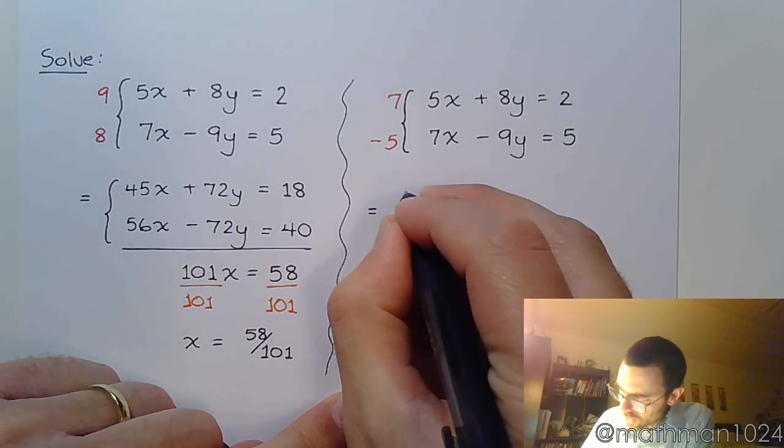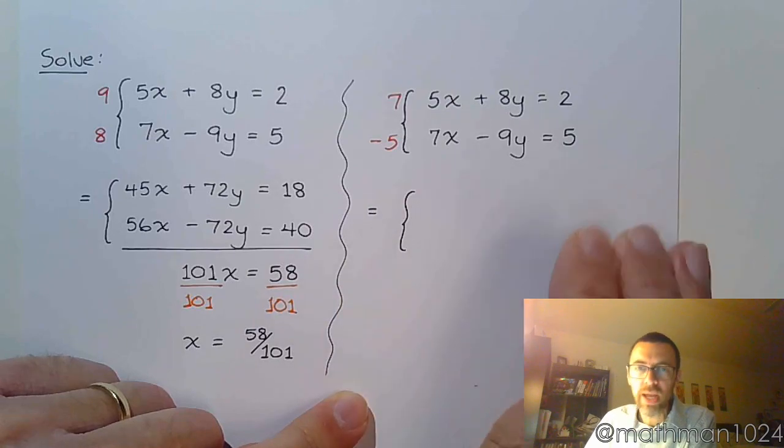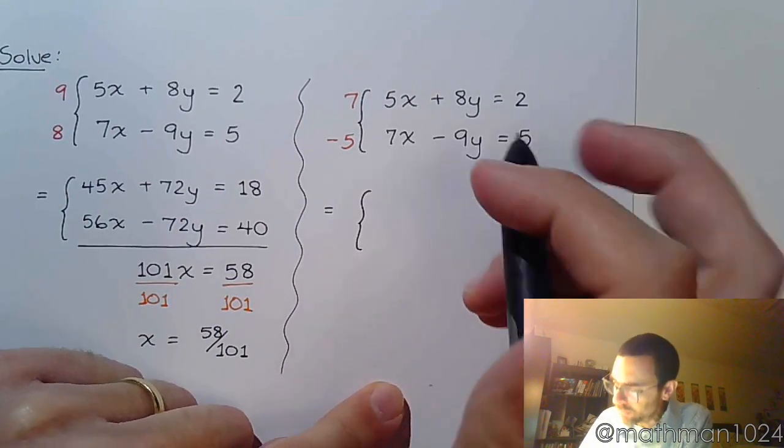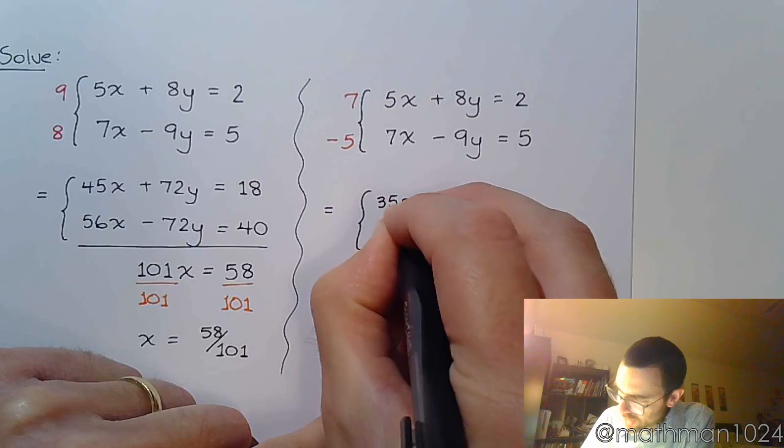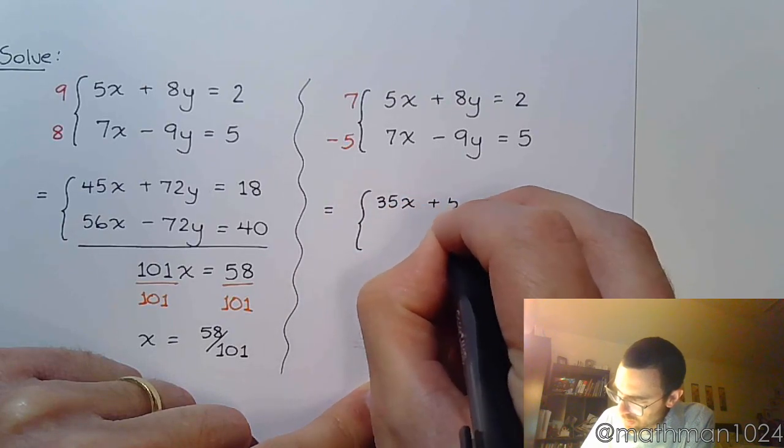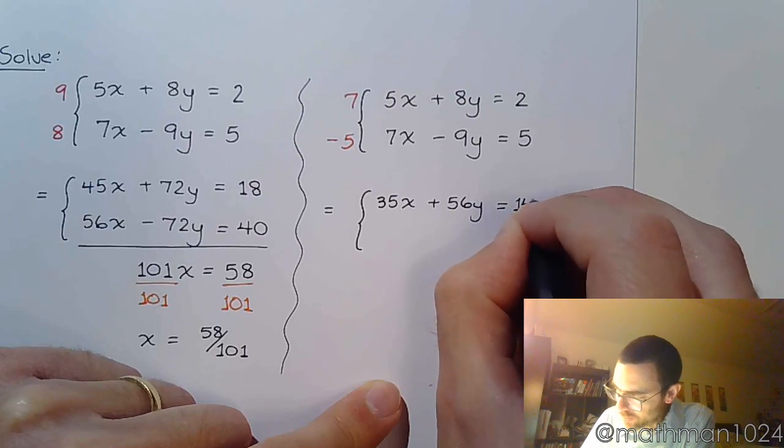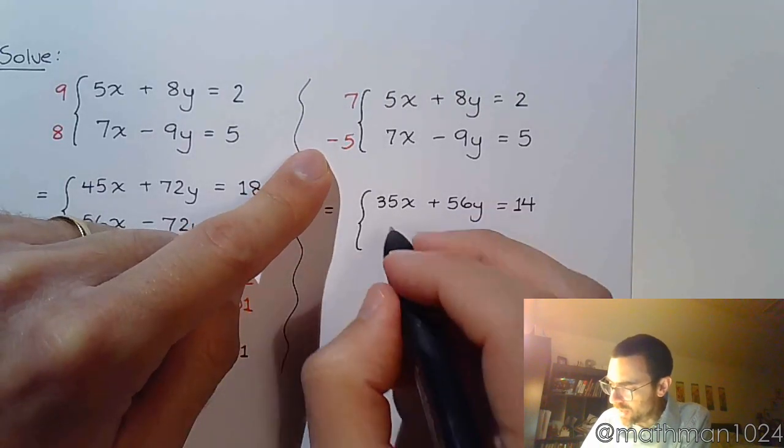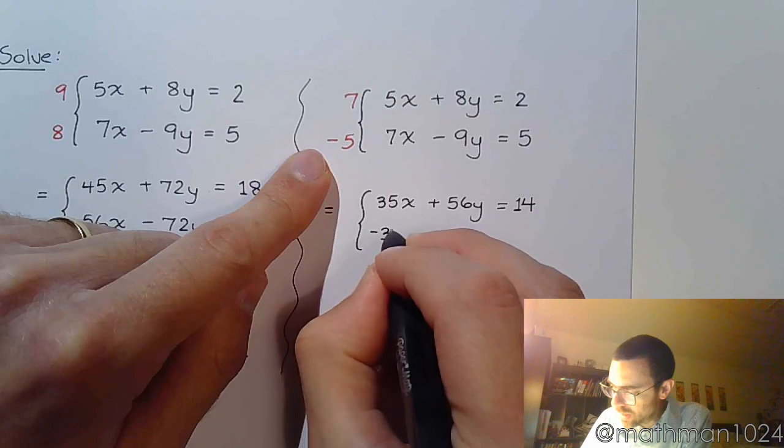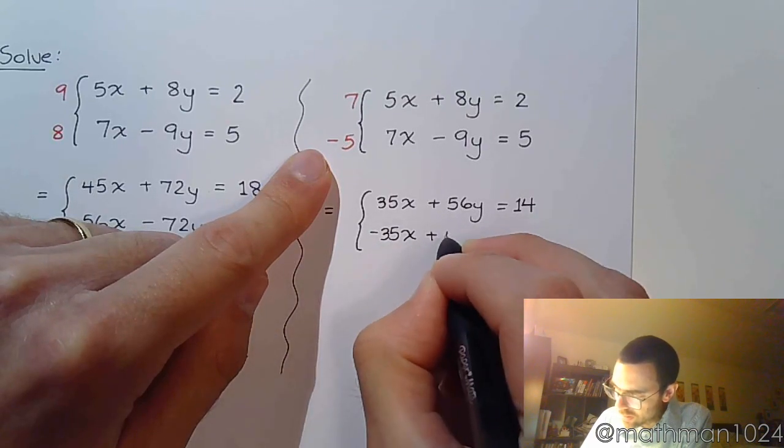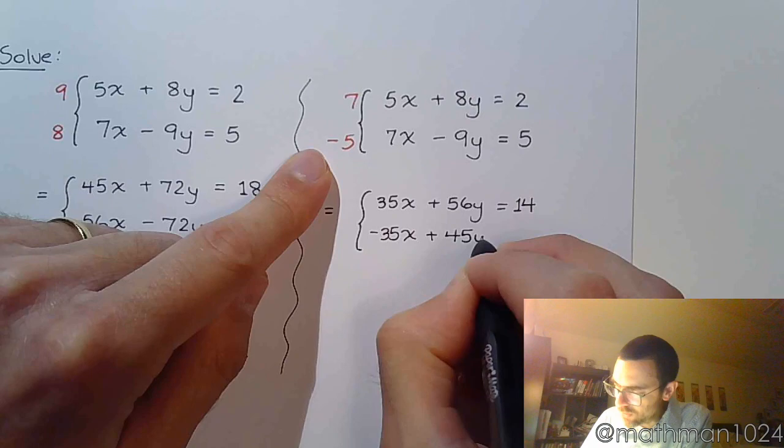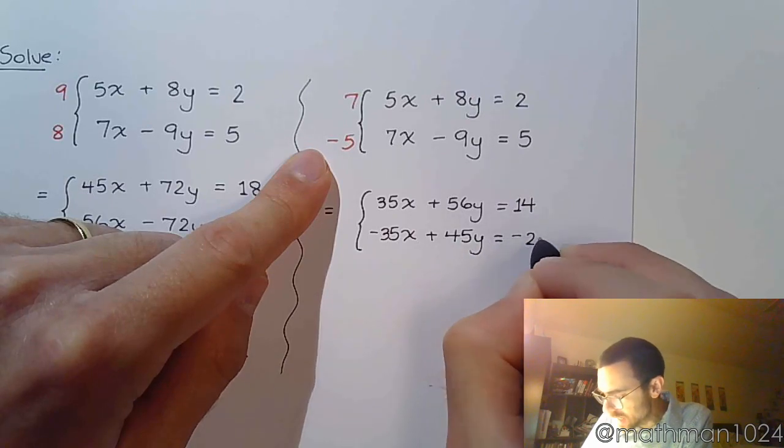Now let's rewrite our system after we've done this multiplication here. All right, so that's 35x plus 56y equals 14. And then down here with a negative 5 distributing is negative 35x plus 45y equals negative 25.